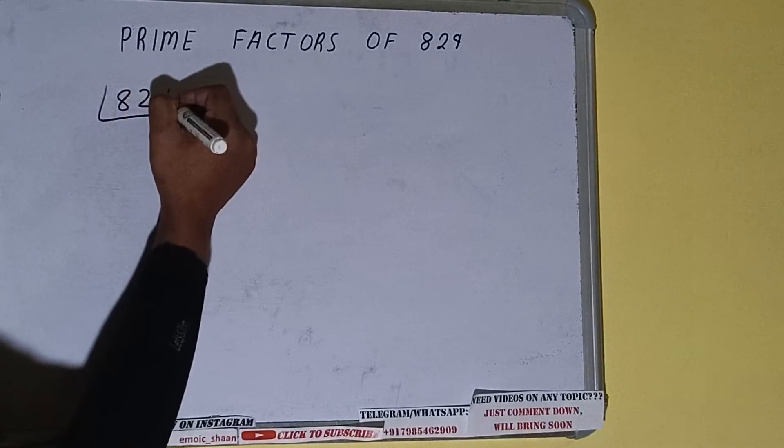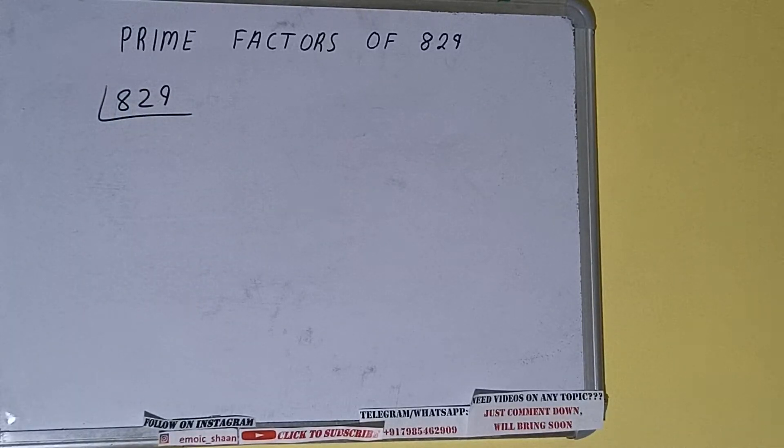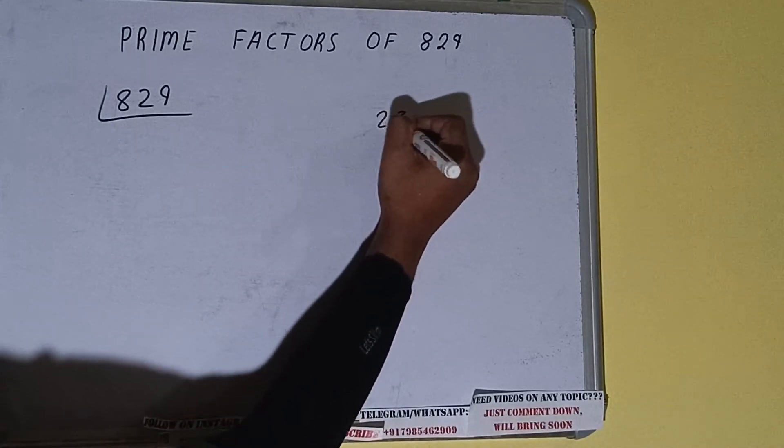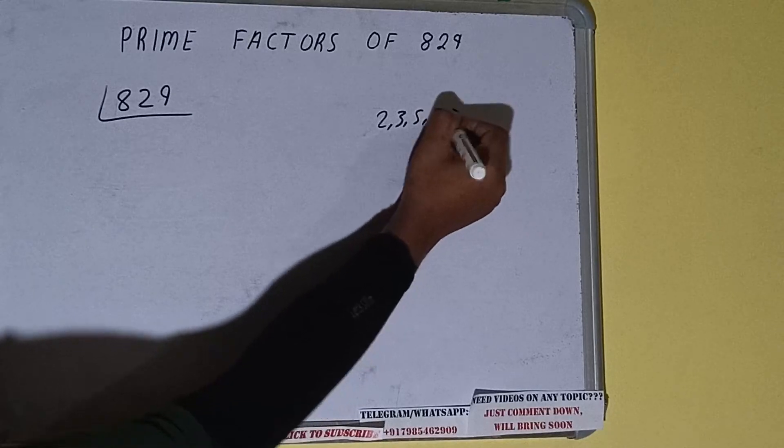The next thing we need to know about is what are prime numbers. Prime numbers are numbers that are divisible by 1 and the number itself, like 2, 3, 5, 7, and so on.